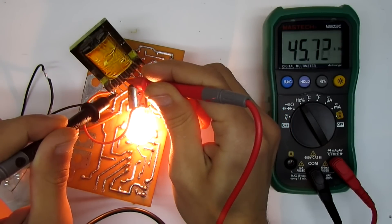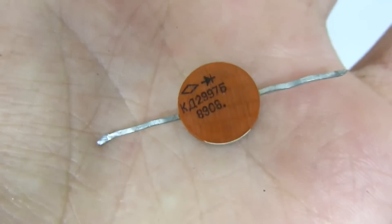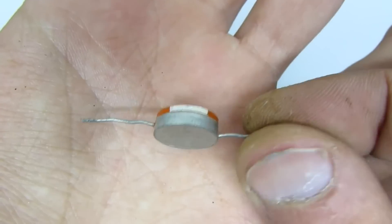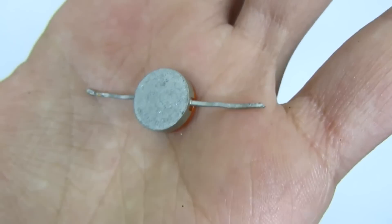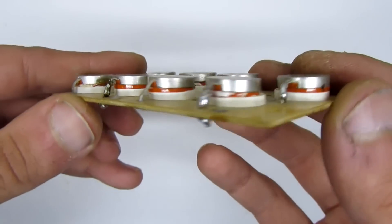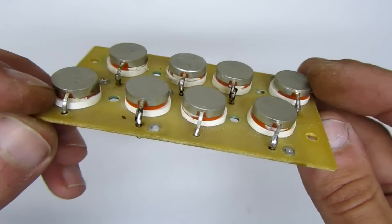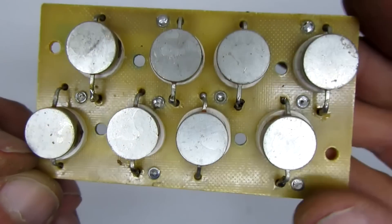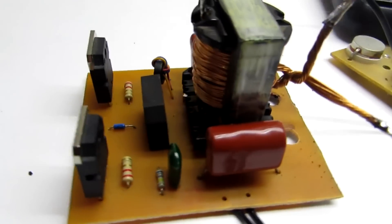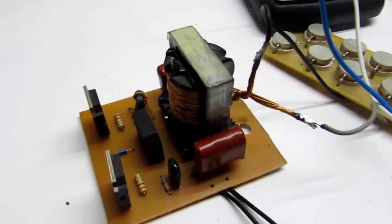For the measurements, we must first rectify it. For the purpose, I used a powerful bridge assembled from diodes KD2997. Each can withstand current up to 30 ampere if you put them on the radiator. But I connected two bridges in parallel, so I hope they will not burn during the test.